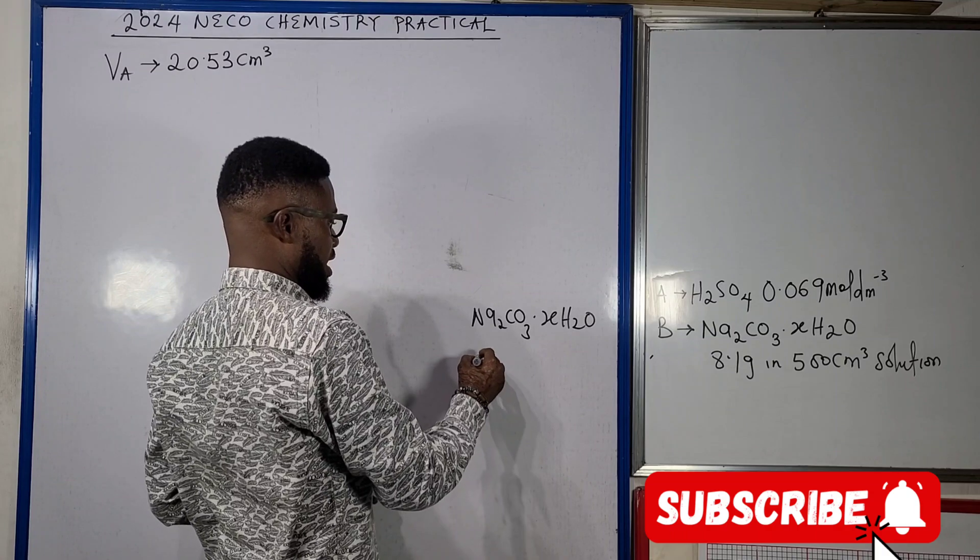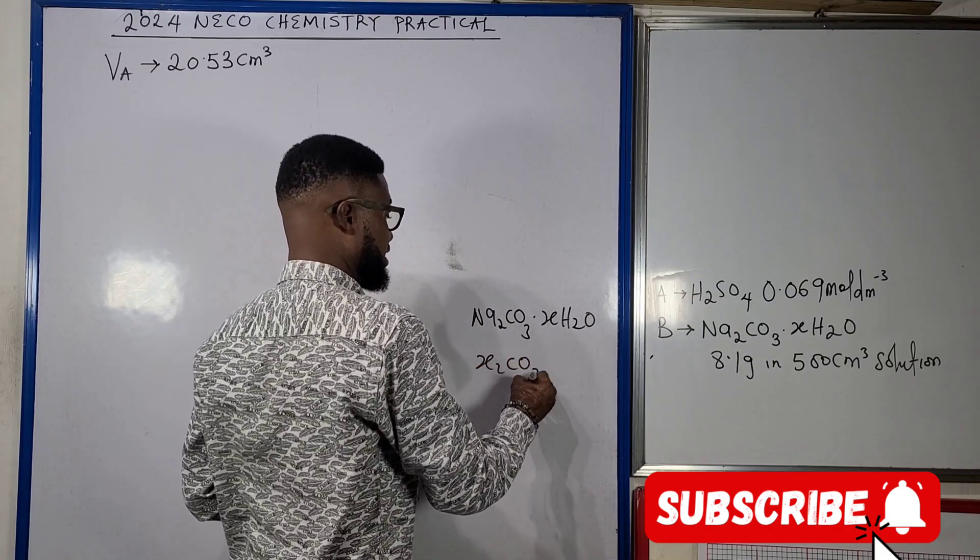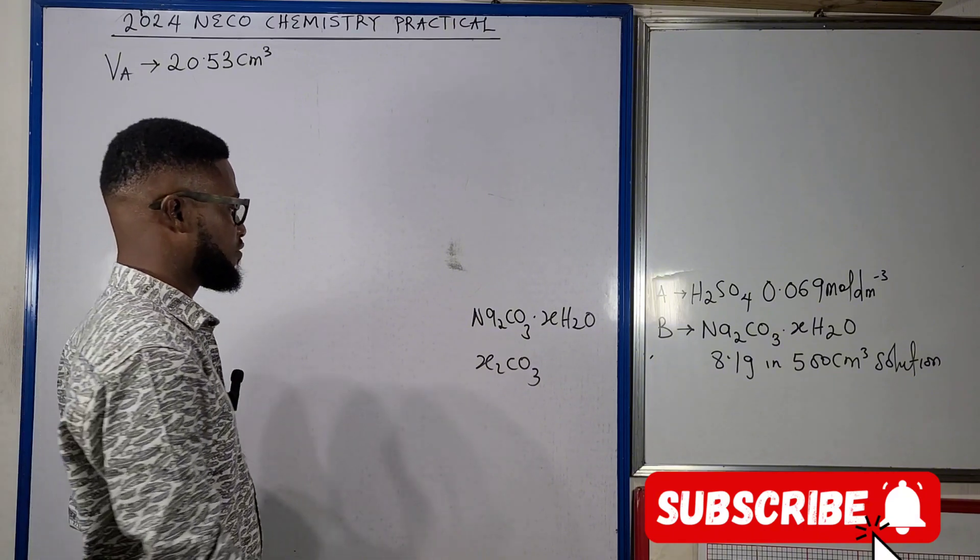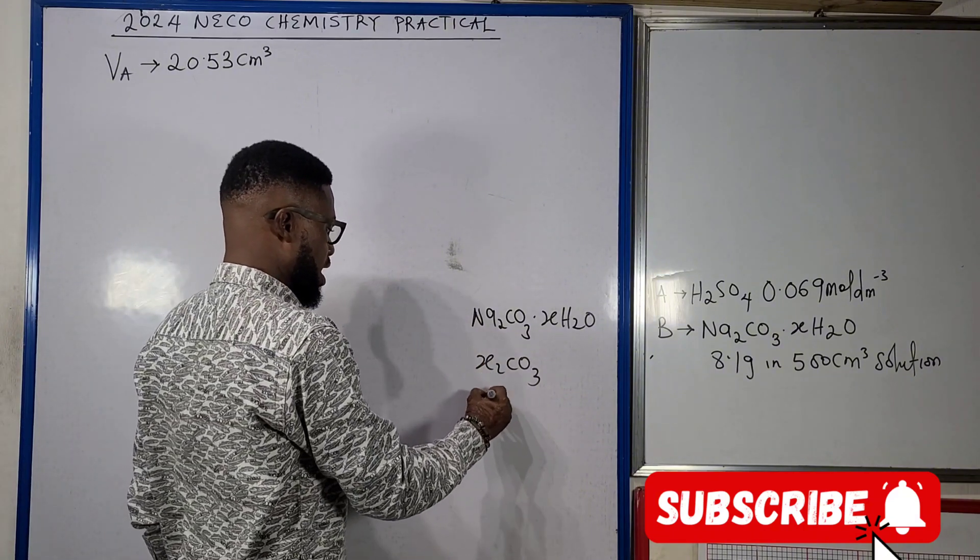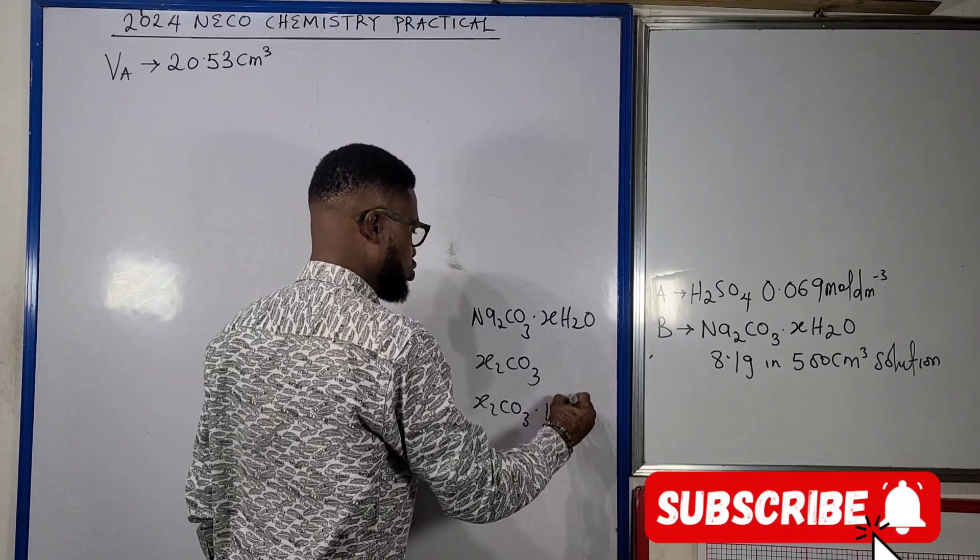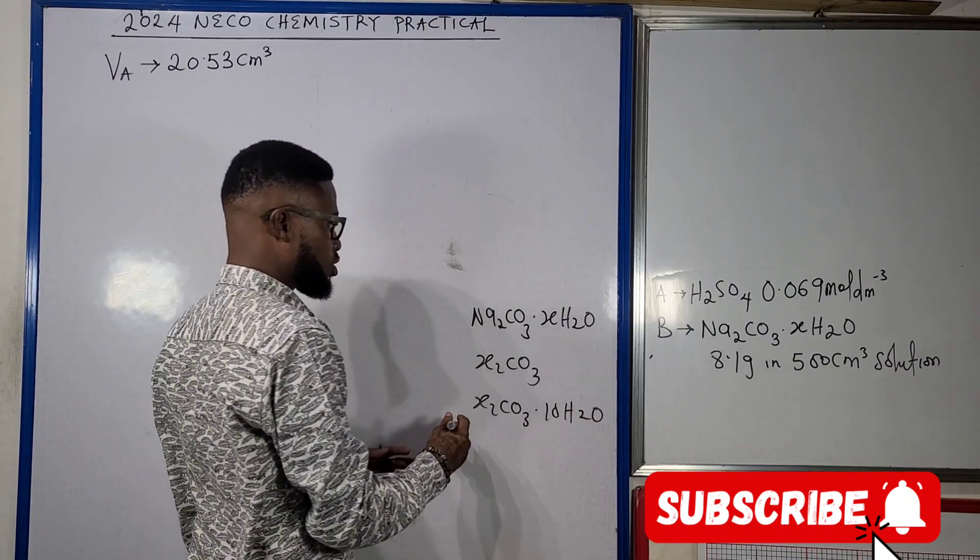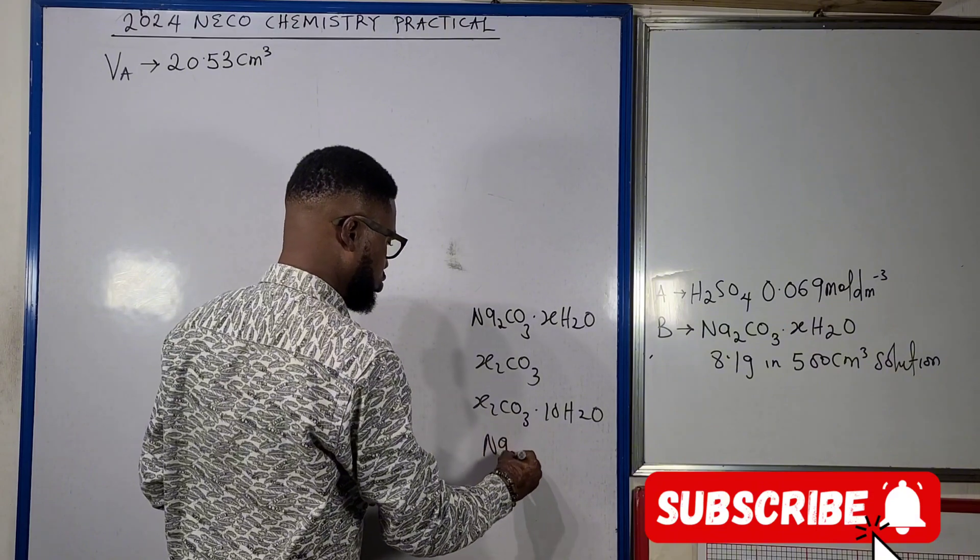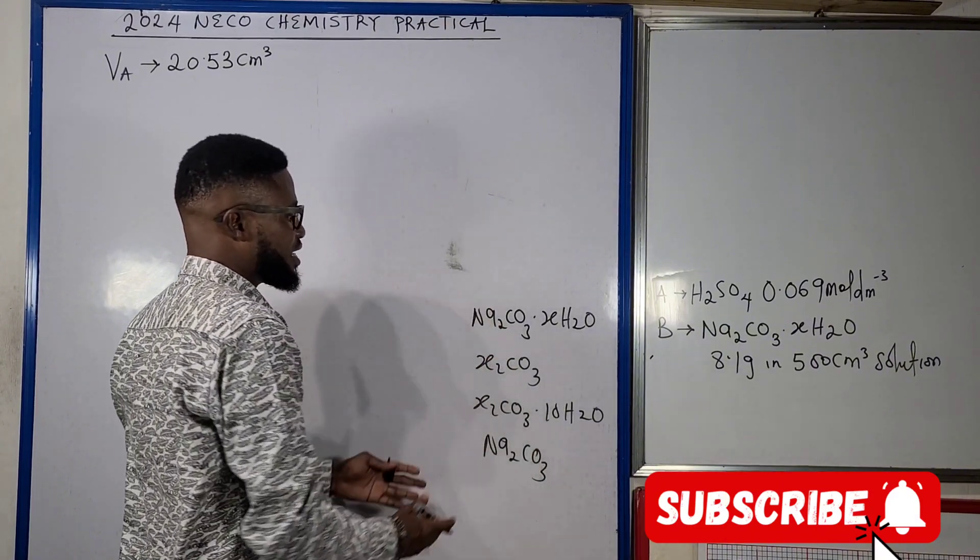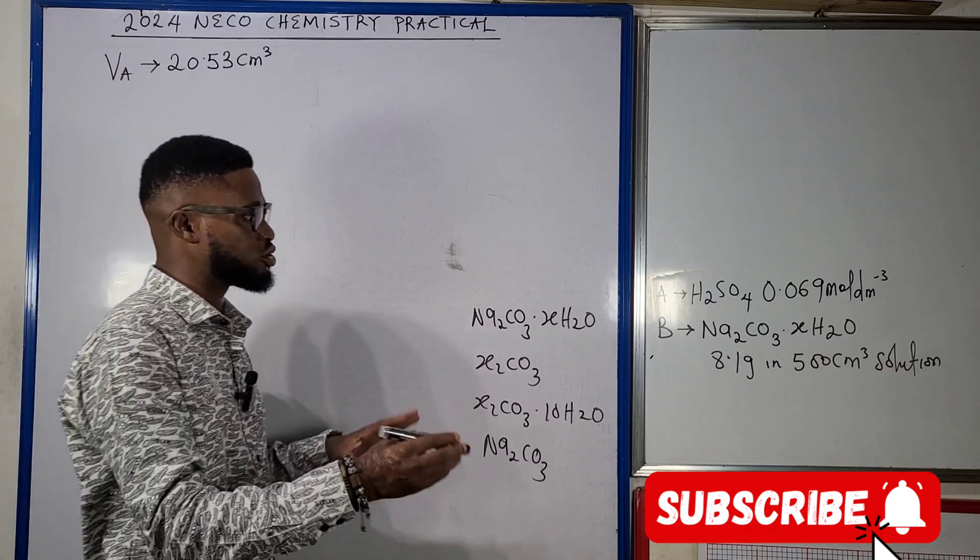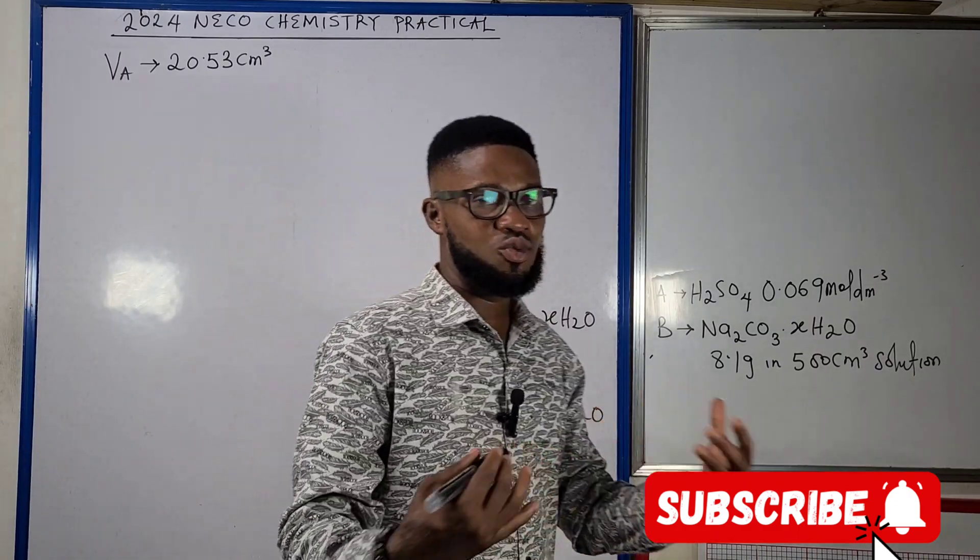It can be like in this form Na2CO3 dot xH2O, which is exactly what we have in this question. It could be X2CO3 in the anhydrous form, or X2CO3 dot 10H2O. It could be in at least four different forms, and that is the reason why we must look at the various formats in which we can have the questions.